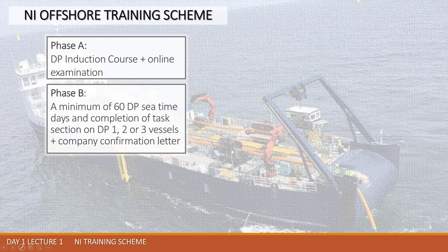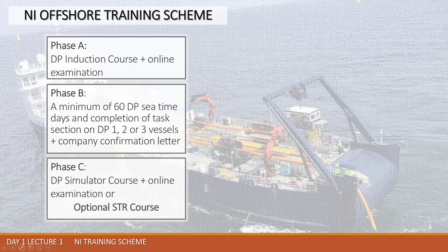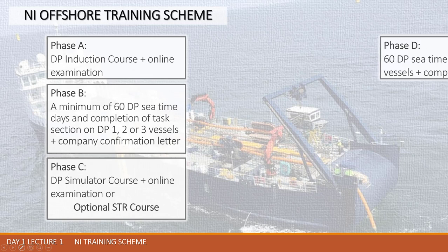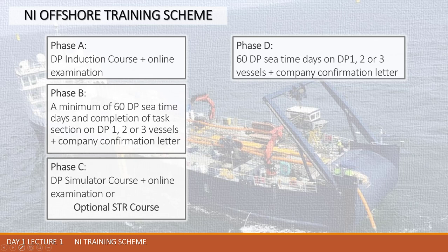As soon as Phase B is completed, you are allowed to take Phase C and D — the DP simulator course, which also includes an online examination. Optionally you may take the STR course, known as C-time reduction, which we will discuss later. Phase D requires 60 DPC time days on a DP vessel of Class 1, 2, or 3 to be completed after Phase C, and all your experience must be confirmed by a company testimonial letter.